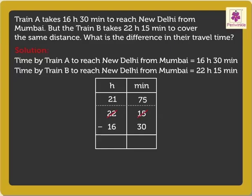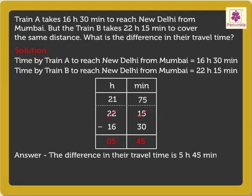Now, first subtract the minutes and then the hours to get the answer. Thus, the difference in their travel time is 5 hours 45 minutes.